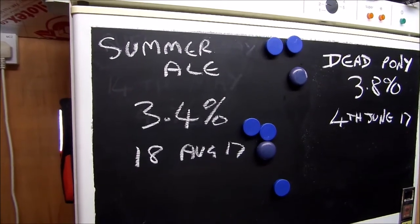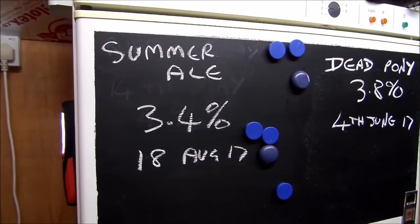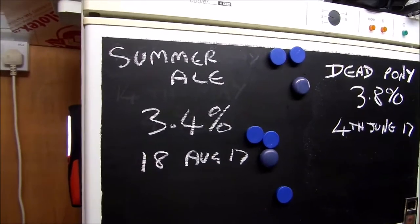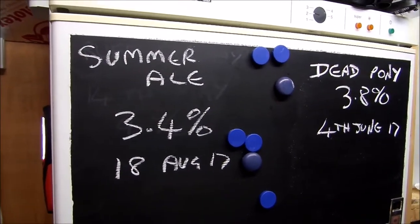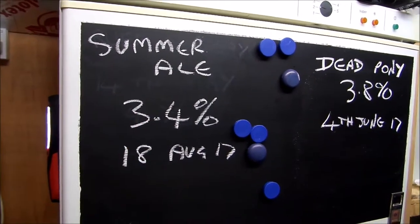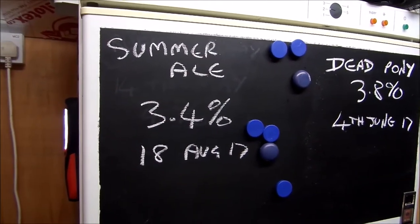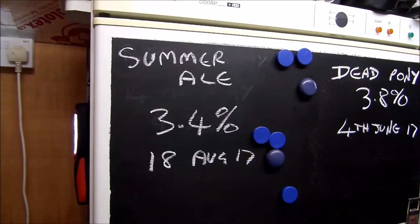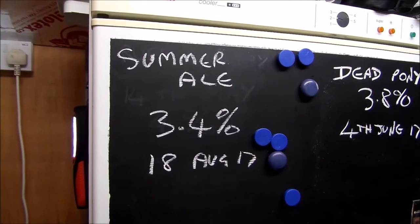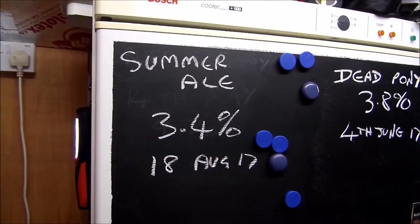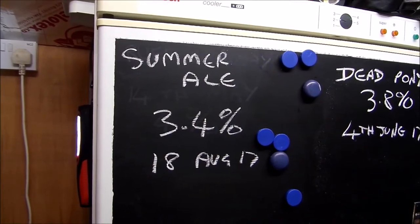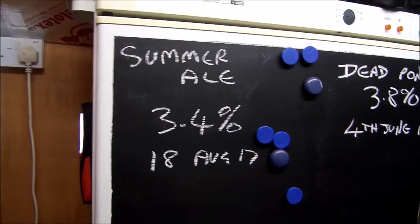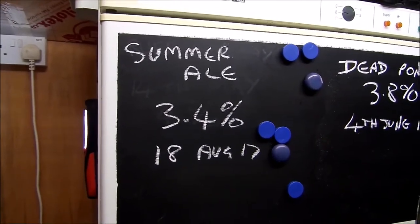To be honest, I didn't put any finings in, or any Irish moss or anything like that and it's really cloudy. So I've put some gelatin in tonight. So far it's bloody awful. I didn't have any US-05 yeast, so I use the Mangrove Jacks M44 and it tastes and smells just like a home brew kit that's had really bad temperature control. So that might end up going down the drain.